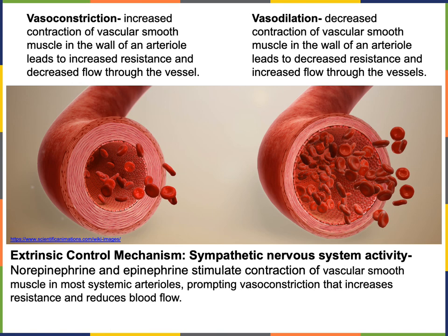Vascular smooth muscle is also regulated by extrinsic control mechanisms. A major extrinsic mechanism stimulating vasoconstriction is the sympathetic nervous system releasing the neurotransmitter norepinephrine and stimulating the adrenal gland to release the hormone epinephrine. Norepinephrine and epinephrine bind to alpha adrenergic receptors on the surface of vascular smooth muscle cells, stimulating contraction, leading to vasoconstriction, increasing resistance, and decreasing flow. As arterioles constrict throughout the body, blood pressure increases — this is a key mechanism for maintaining homeostatic mean arterial pressure.